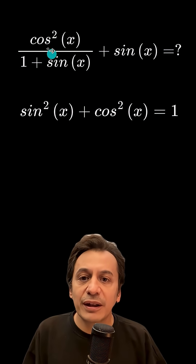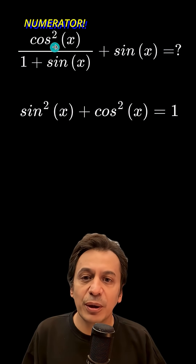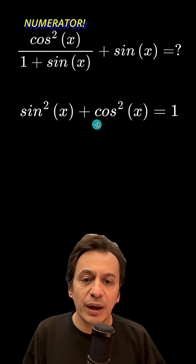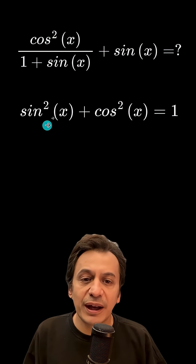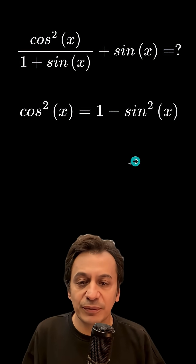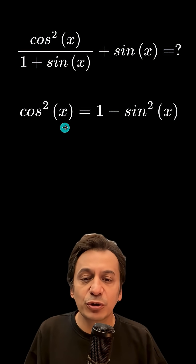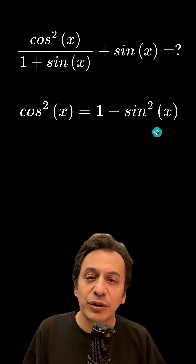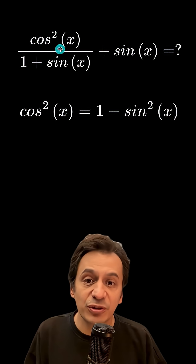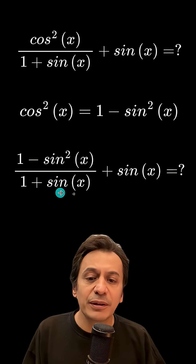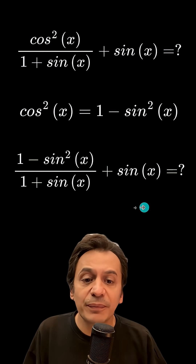First of all, I see an expression in the denominator as cosine squared x. So, I isolate this expression here and move sin squared x to the other side of the equation. This way, I obtain cosine squared x. Now, I will substitute this value I found in place of cosine squared x here. After doing this, my question has taken a new form.